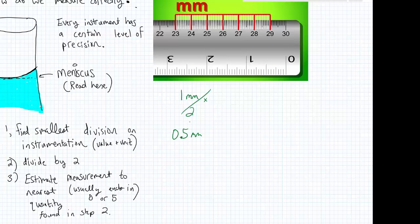So what that means is I'm going to stop my measurement at this decimal place. It's either going to be 0.5 millimeters or I'm going to say it's on the dot, 0.0 millimeters.